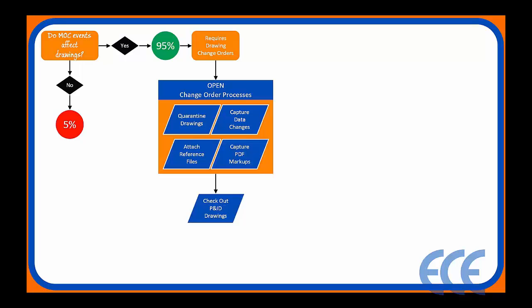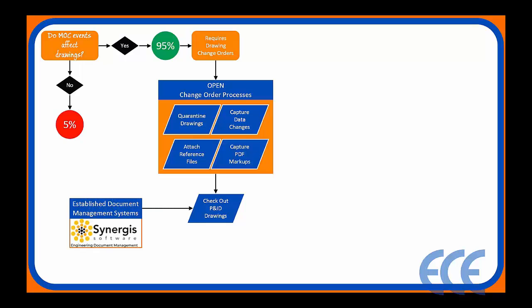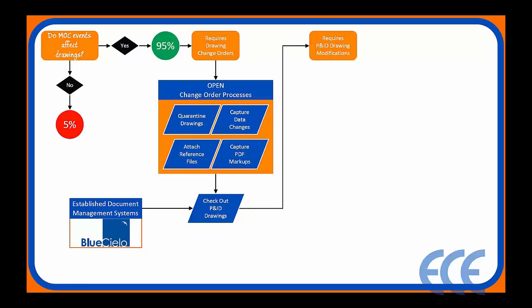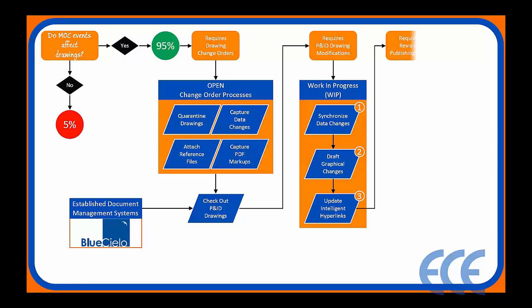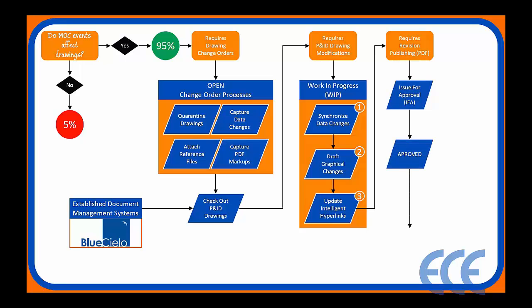We need to check out drawings or documents, which generally come from existing document management systems like Synergis, AutoCAD Vault, Bluecielo, or any of the many other document management systems out there. Once drawings are checked out, we start modifying them — this is where drafting or CAD activity begins. These work-in-progress activities lead to issuing a document for review, publishing to PDF for stakeholder approval. If it doesn't get approved, we're back to the drawing board.